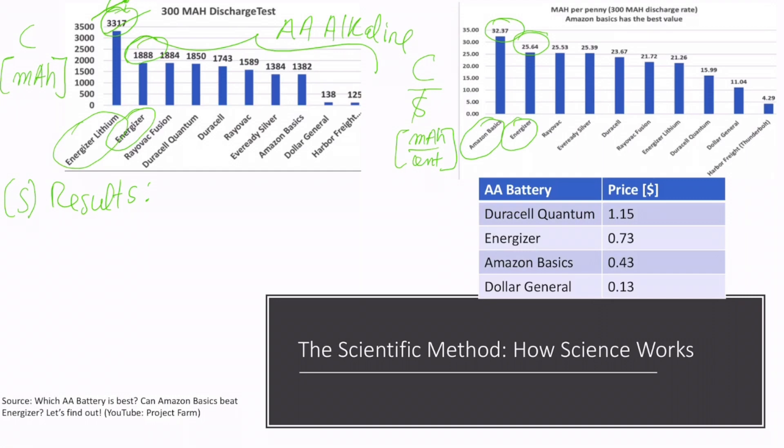So the results can be summarized as follows. The first point is that the highest capacity value is given by the Energizer. The second point is that the highest capacity per unit price is given by the Amazon Basics, and the second highest is given by the Energizer.